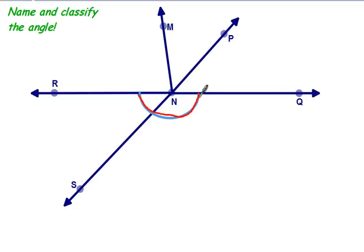This is a straight angle, and it's angle RNQ. RNQ could also be QNR. This is angle RNS or angle SNR, and it is an acute angle.